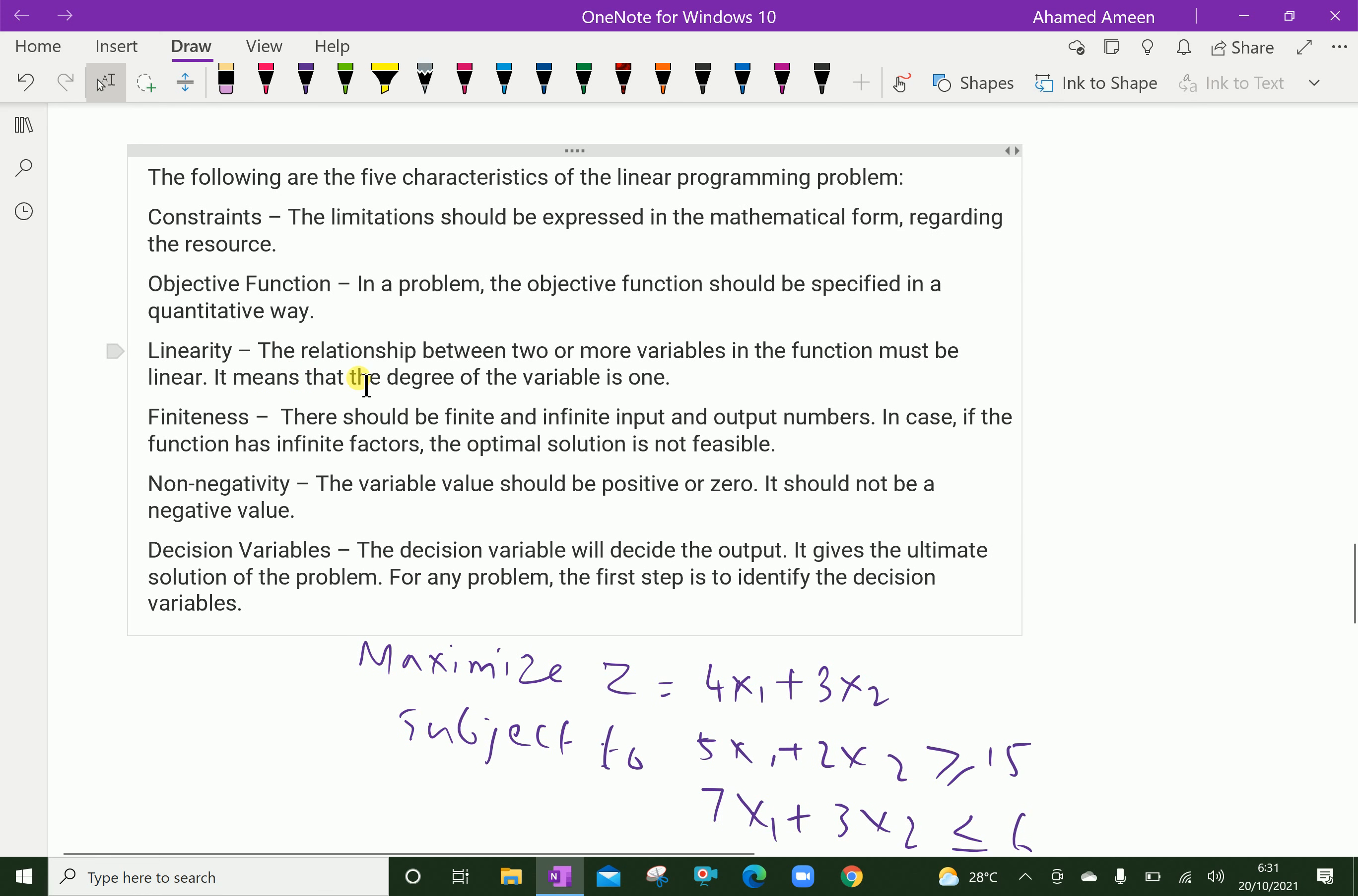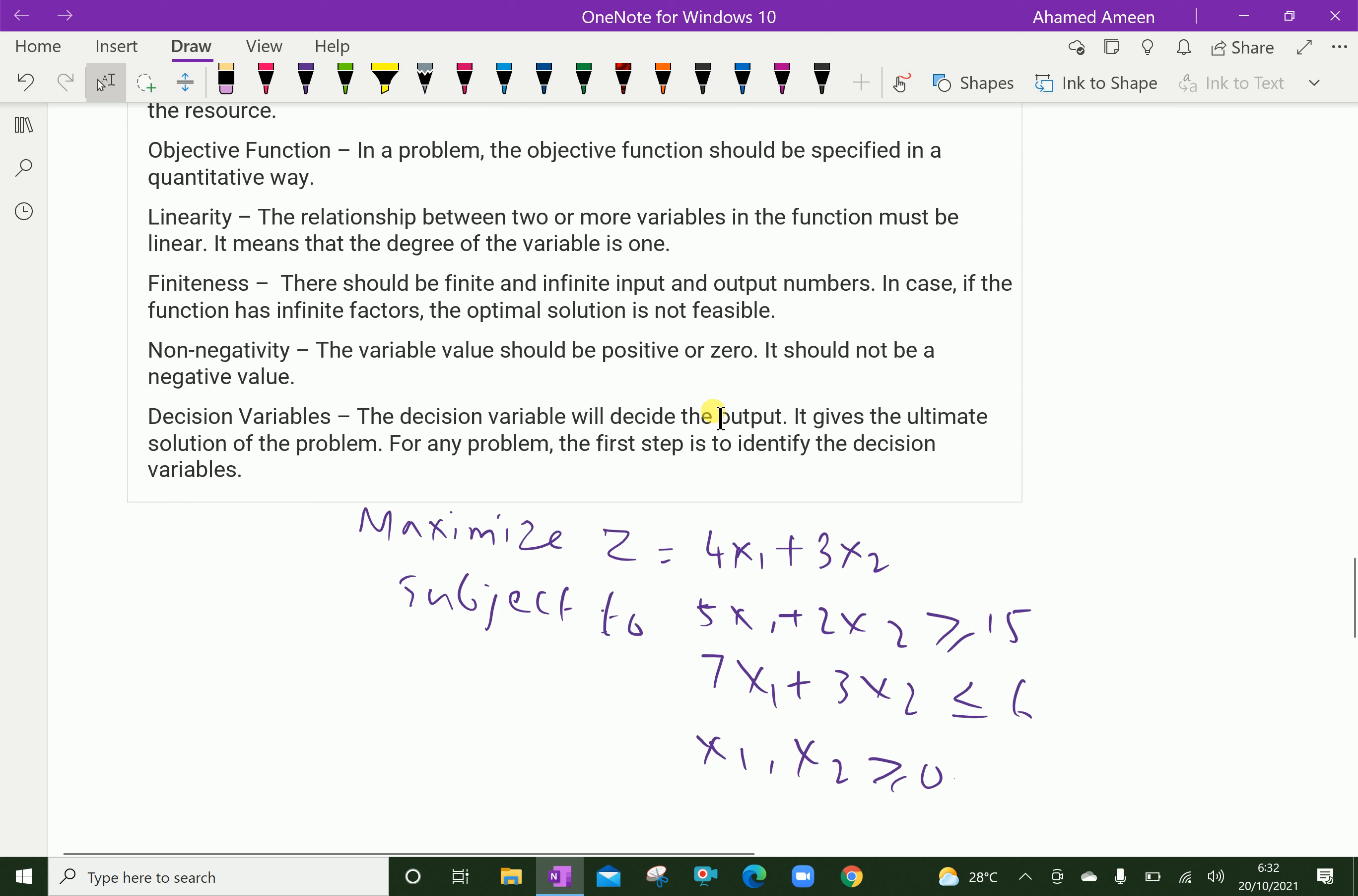Here, linearity. The relationship between two or more variables in the function must be linear. It means that the degree of the variable is 1. Other than linear, we cannot do the linear programming for these particular conditions.